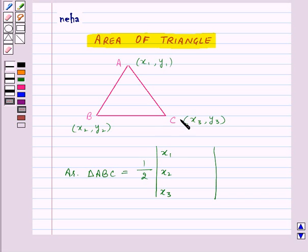the X coordinates of these three points. Then Y₁, Y₂, Y₃, the Y coordinates of these three points, and the elements of the third column will be 1, 1, and 1.